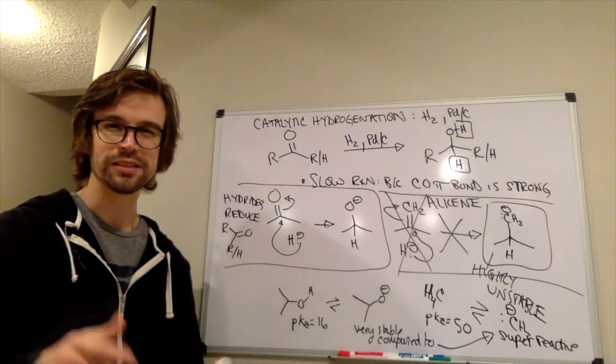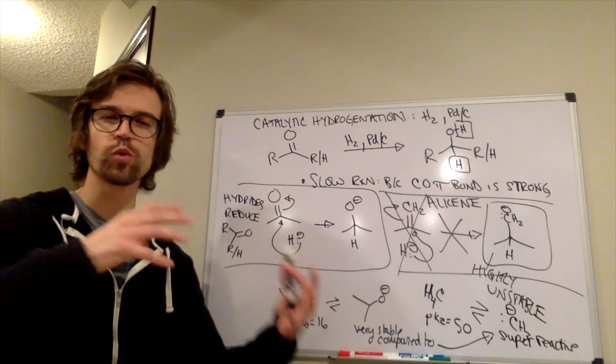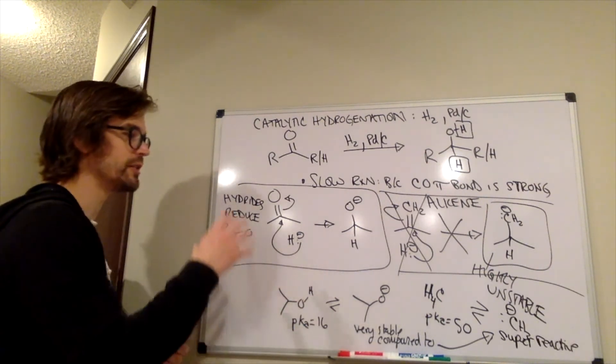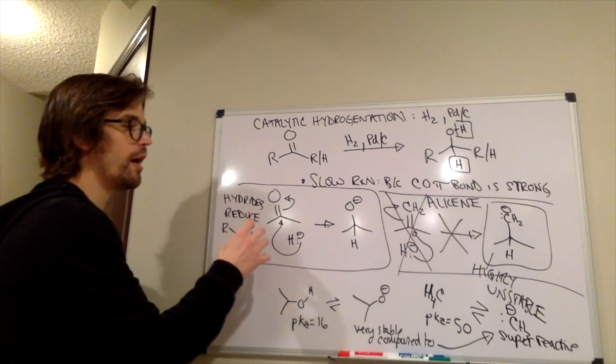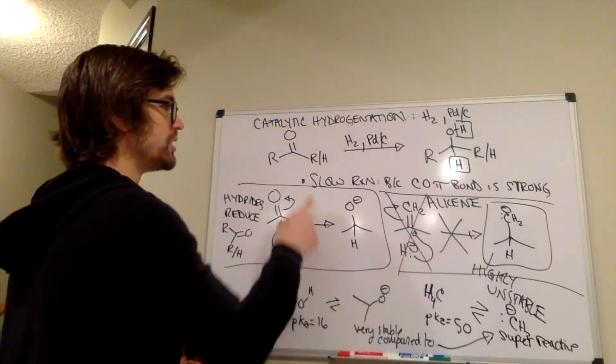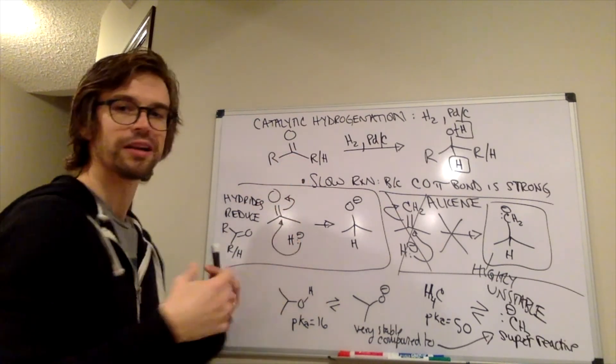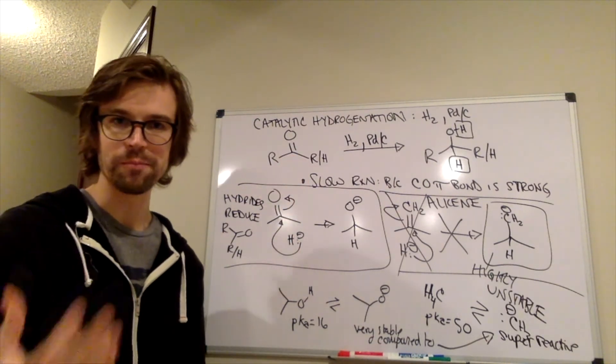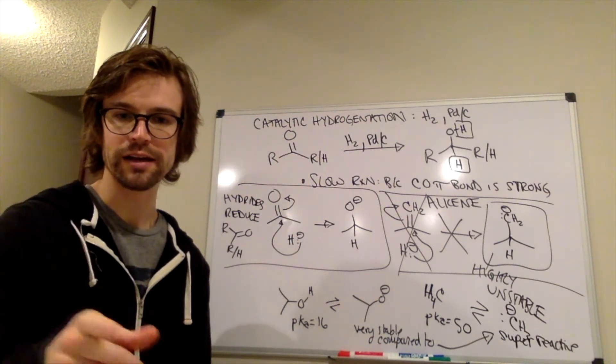So that's just us working through why these hydride reagents reduce these well, and they don't reduce those. And we just said that catalytic hydrogenation does not reduce this well, but it does reduce alkenes a lot better. So let's look at an example now.